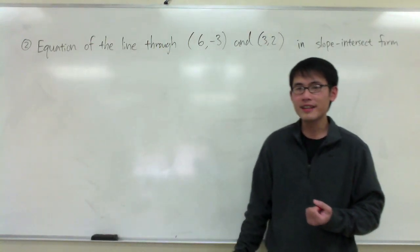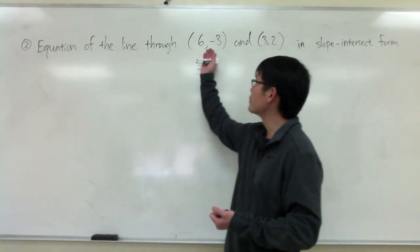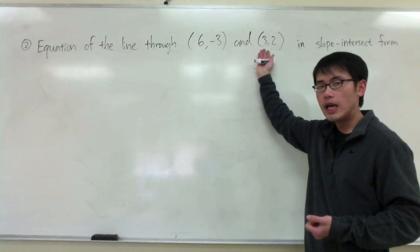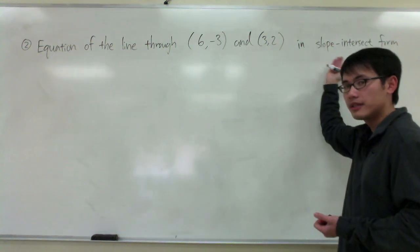For the second question, we are going to write an equation of a line that goes through the points and we want our answer to be in the slope-intercept form.